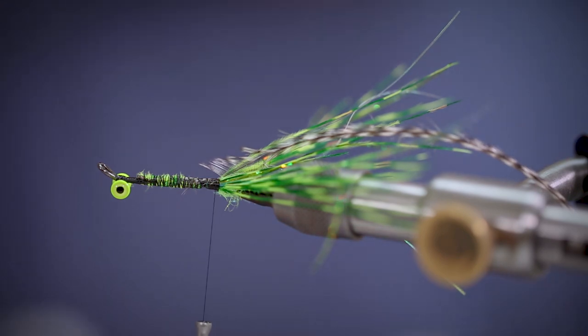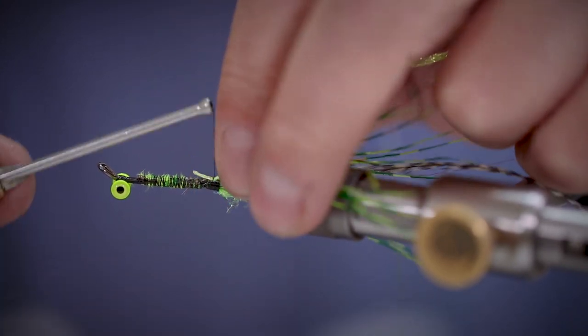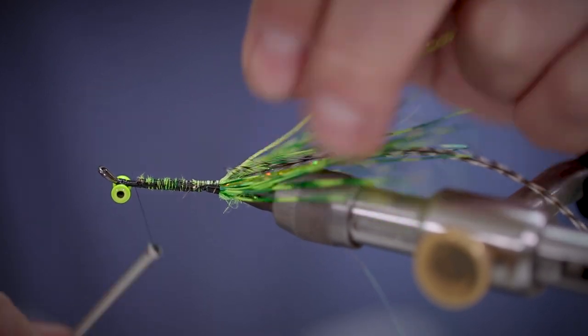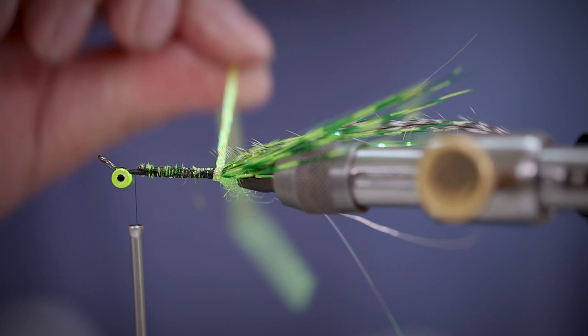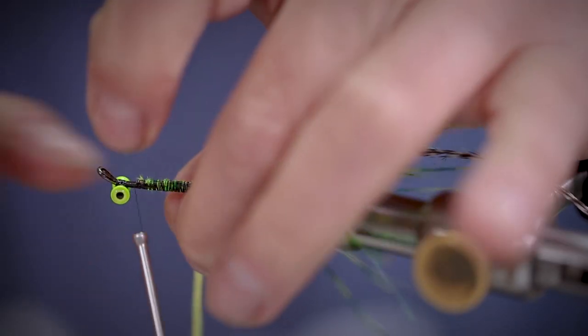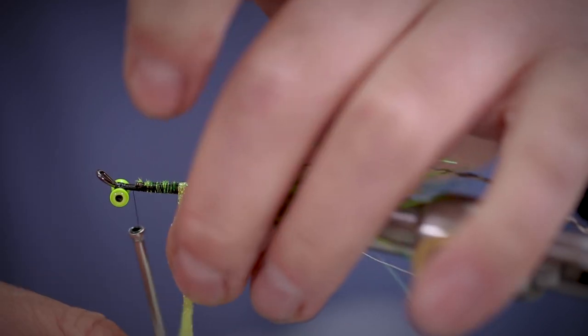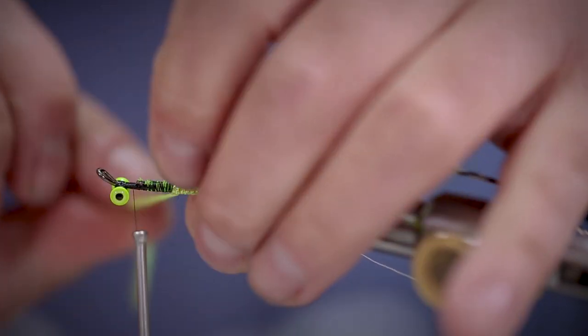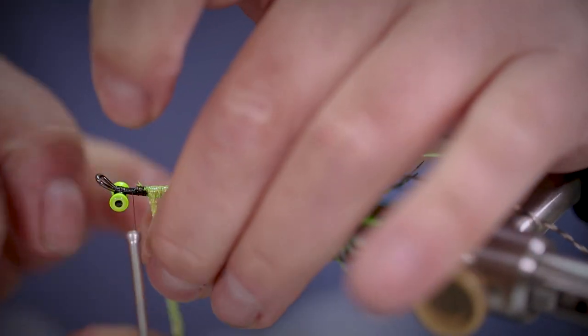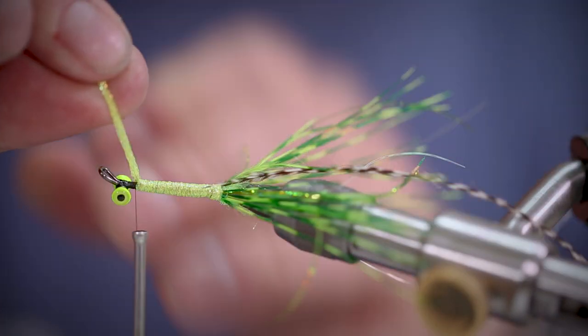Then we're going to tie in some holographic flat braid, and we're going to start working up the body, overlapping with every turn. Just stopping short of the dumbbell eyes. Tie it in and trim away the waste.